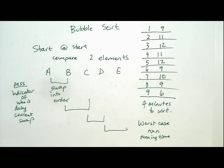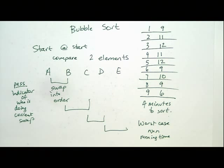If all of you did swaps at the same time, that would change the running time. If you paired yourselves up — all the pairs doing comparisons at the same time — that's like multiple processors, running in parallel. When we talk about running time for algorithms, we're usually talking about a single processor. Running in parallel can reduce running time by a whole lot. Can we figure out the running time if we did bubble sort as parallel as possible?